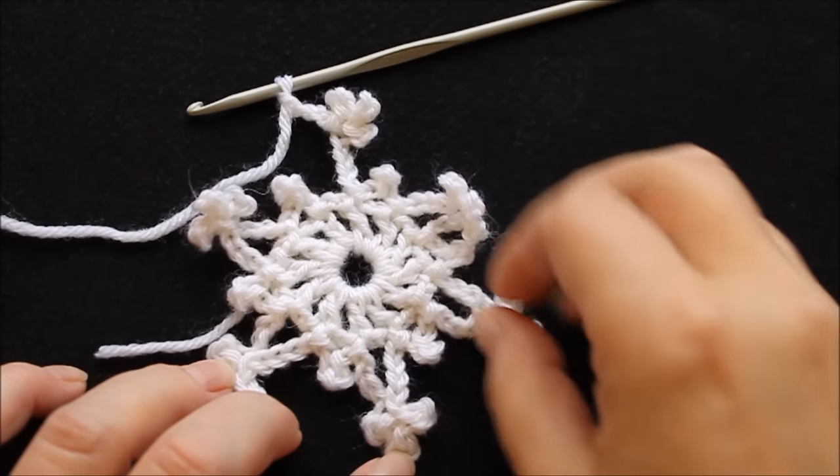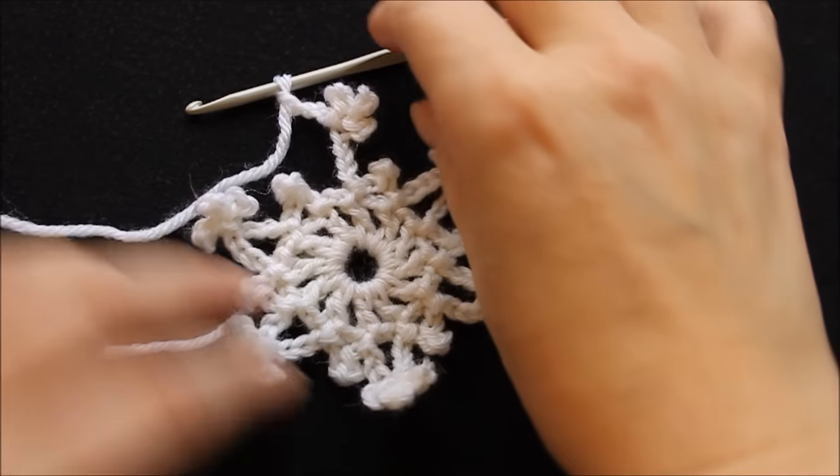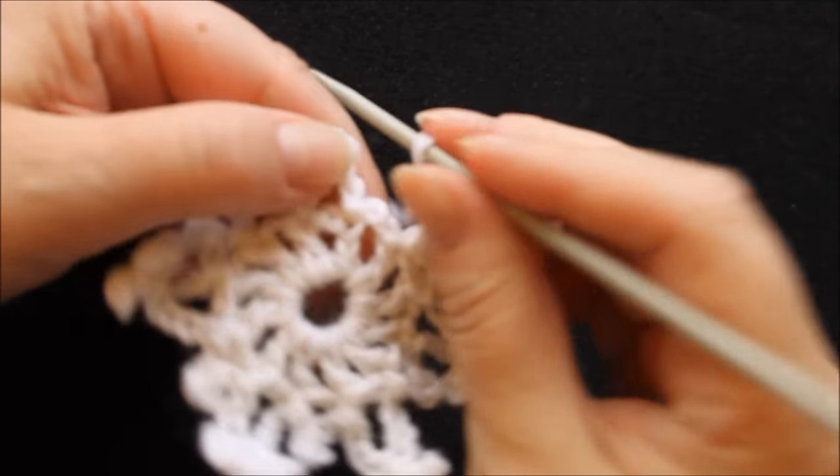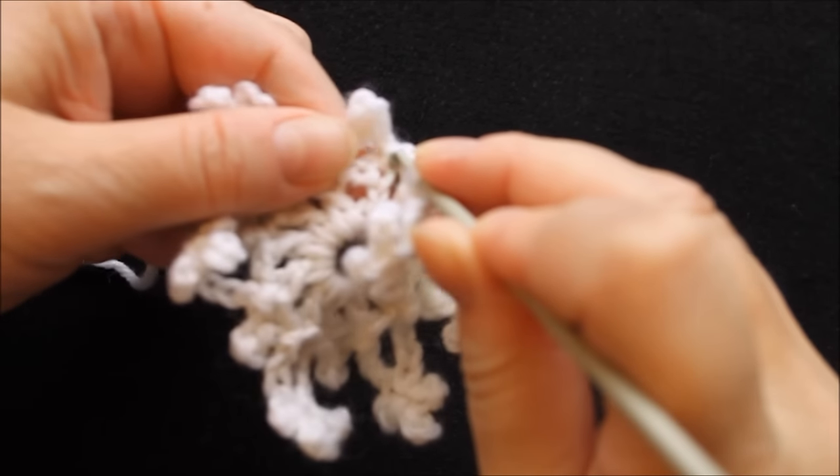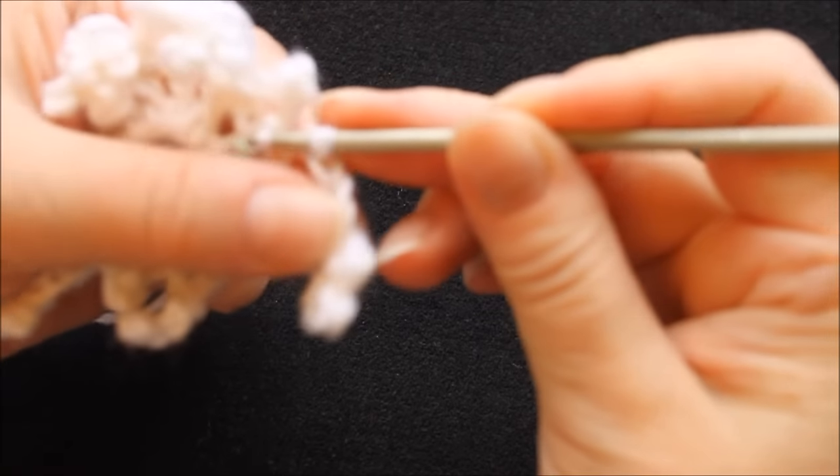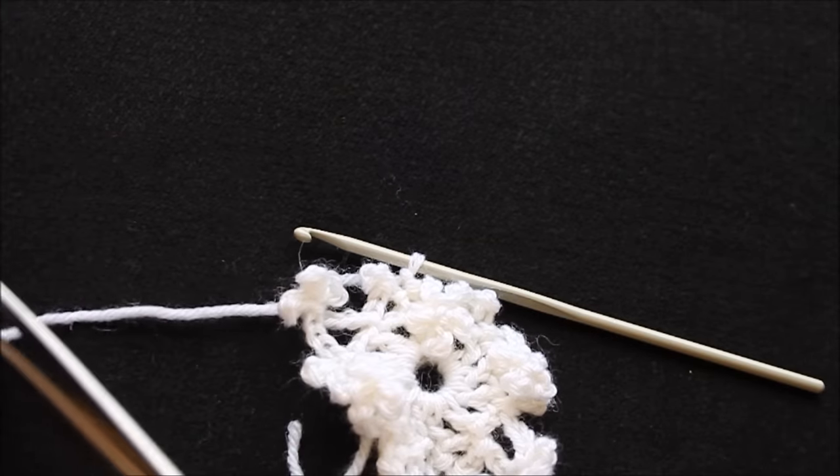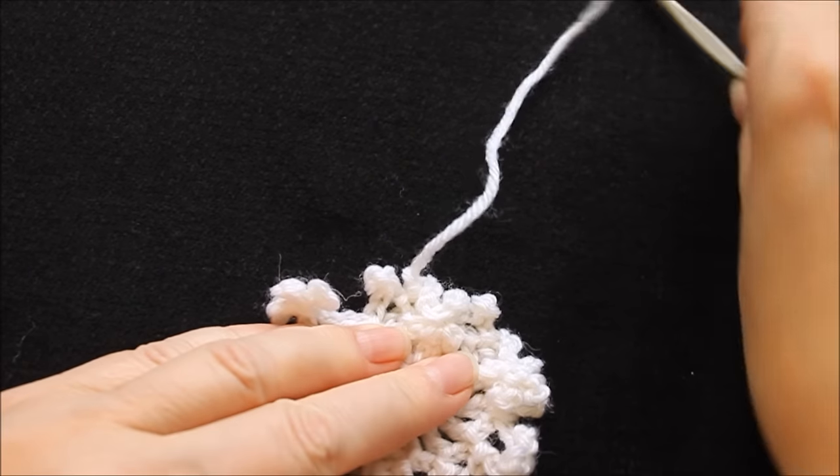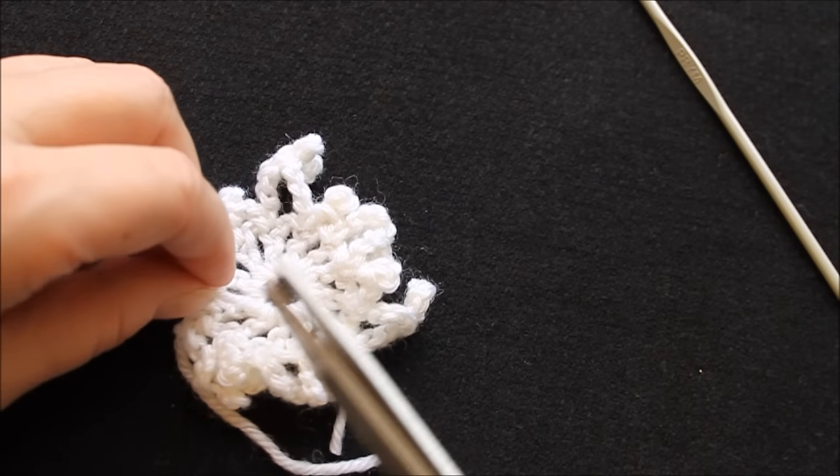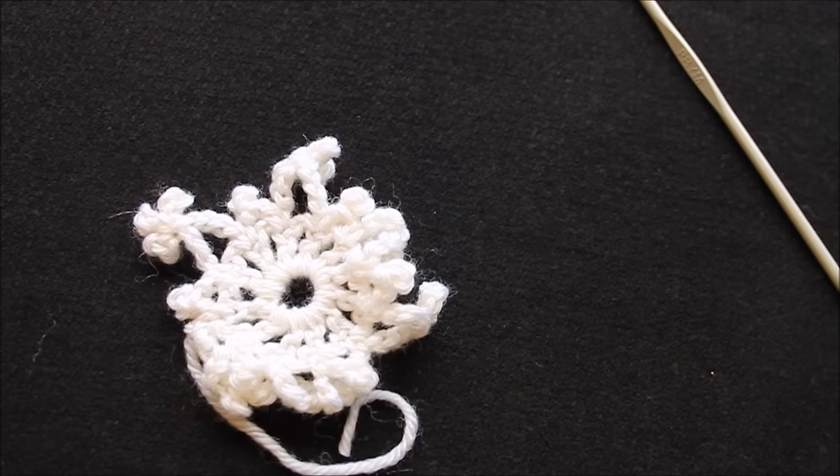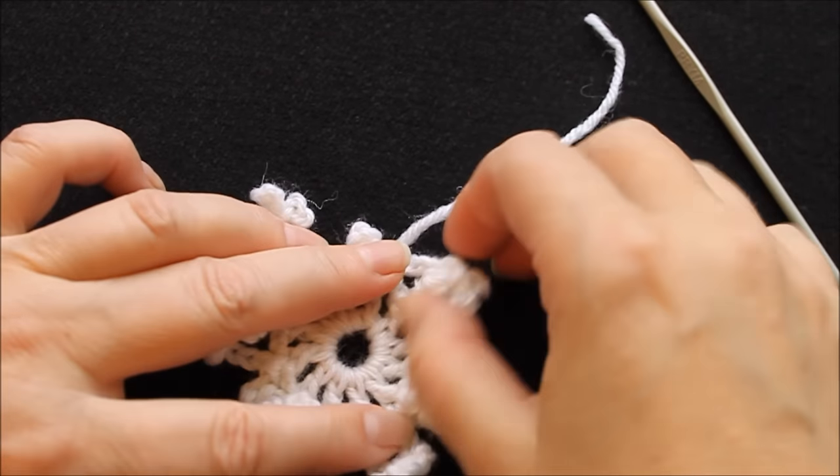So here we are. I've done the second row alternating the two different kinds of points and I am on the last one here now and I simply attach it to the start of the row with a slip stitch there and then I cut the yarn off. So here it is and I can cut this one off there and then I'll pass this with a needle.